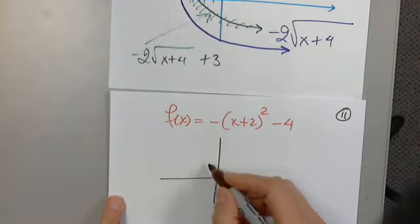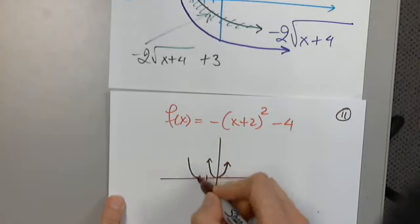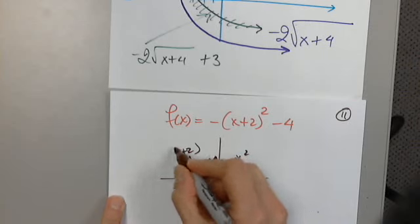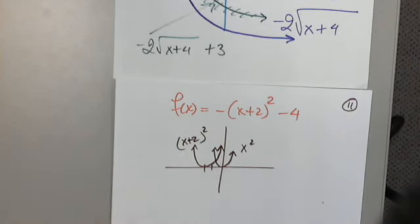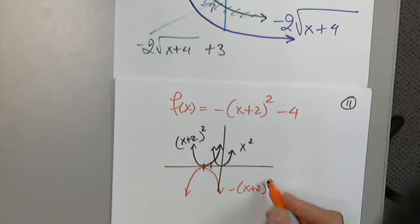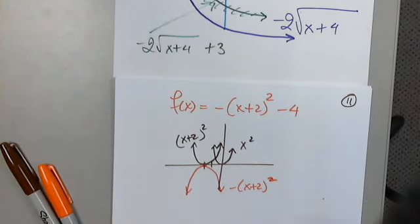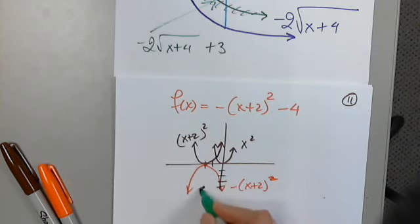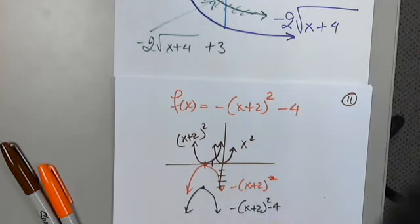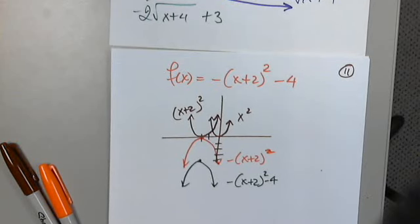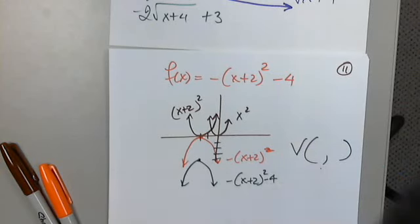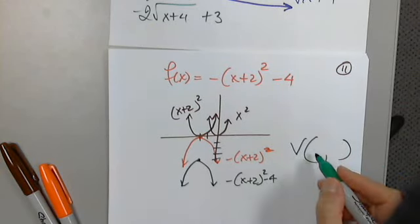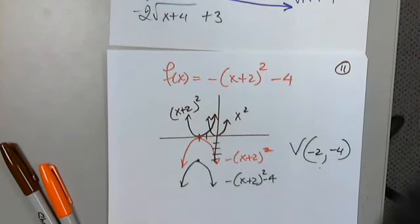Here's the graph of x squared. Here's the graph of x plus two, all squared — that's a left shift of two. Then I reflect, getting negative x plus two squared, and then down four: one, two, three, four. So when we get to chapter three, this will be a piece of cake. The vertex — which is the max in this case — is negative two, negative four.